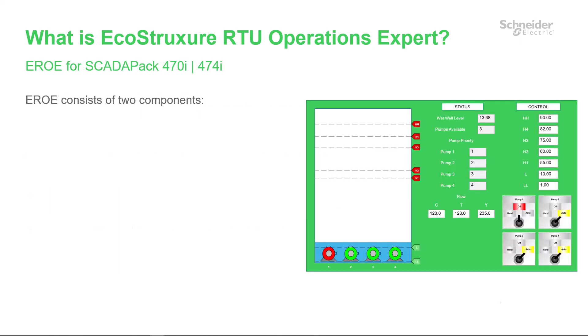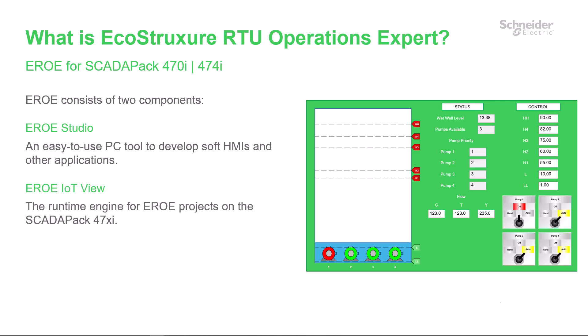With Aero, you can manage RTU applications from any connected device via web browser using a soft HMI, develop visualization of on-site processes turning data into actionable information using Python for edge applications, and gain access to communication drivers for connecting to a wide range of OT devices and tools. Aero consists of two components: Aero Studio, which is an easy-to-use PC software application for developing soft HMIs and other applications, and Aero IoT View, which is the runtime engine for Aero projects running on the SCADAPack's edge processor.